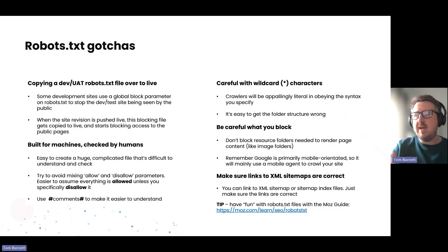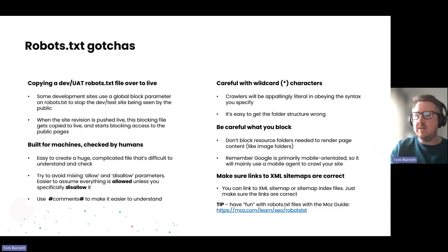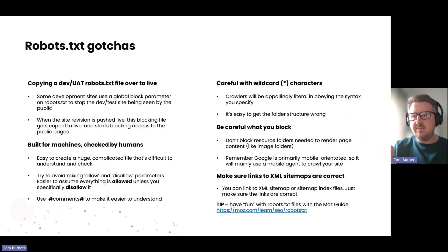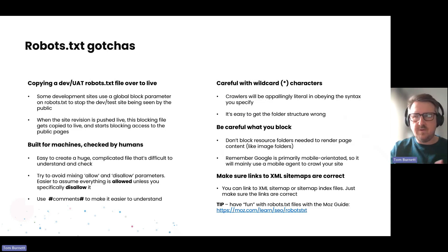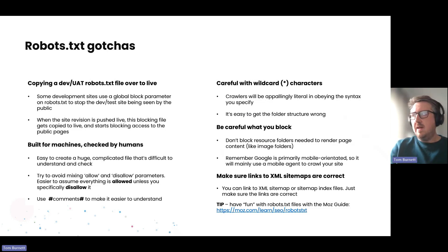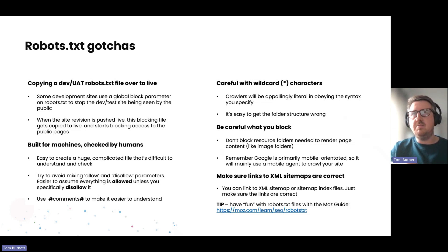Again going back to that testing piece — try it out on techseo.com, which is a good example where you can put in your robots.txt file, give it some URLs, and it'll tell you whether or not they've been excluded from being crawled.